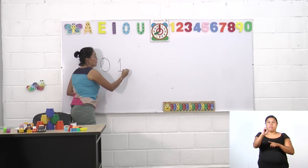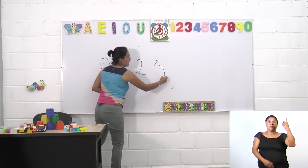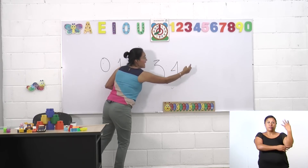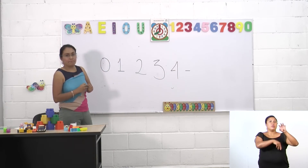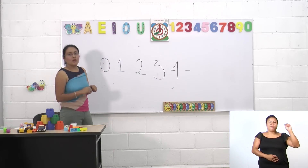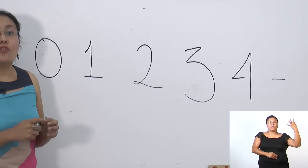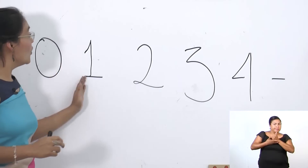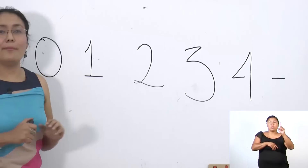Nos posicionamos con uno, dos, tres, cuatro, así hasta llegar al número nueve. ¿Podrías ayudar a formar colecciones allá en tu casa de uno, dos, tres y cuatro elementos?